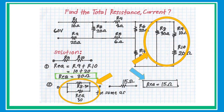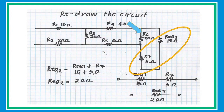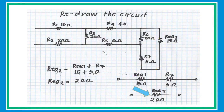Redraw the circuit to simplify and analyze again. Since R_equivalent and R7 are connected in series, you can add them. However, R6 cannot be included yet because there is branching at R5. Add R_equivalent and R7 to get a value of 20 ohms.